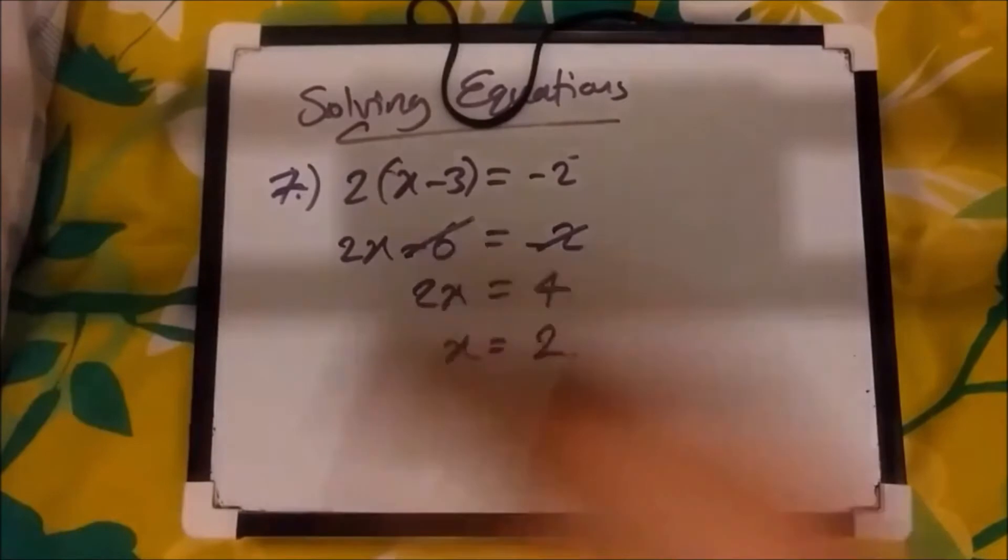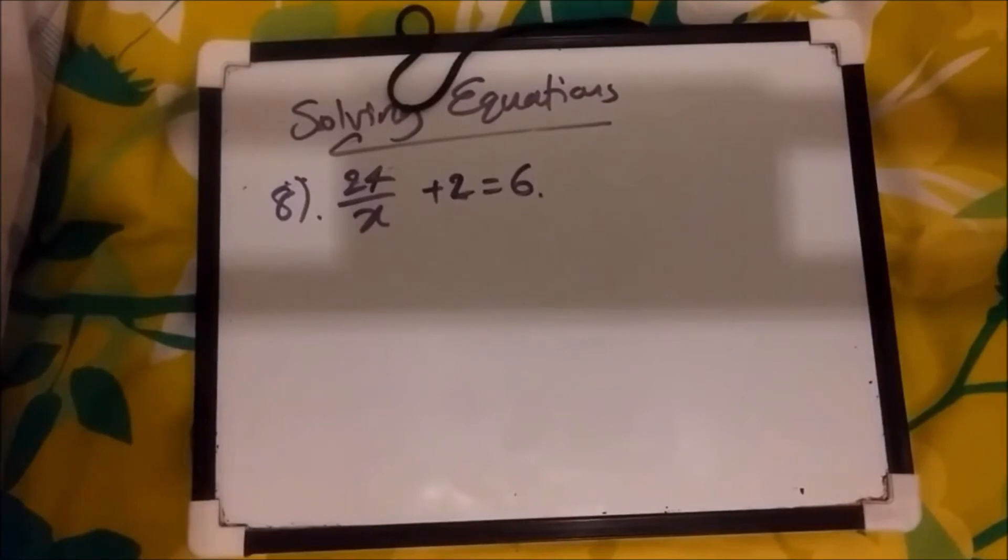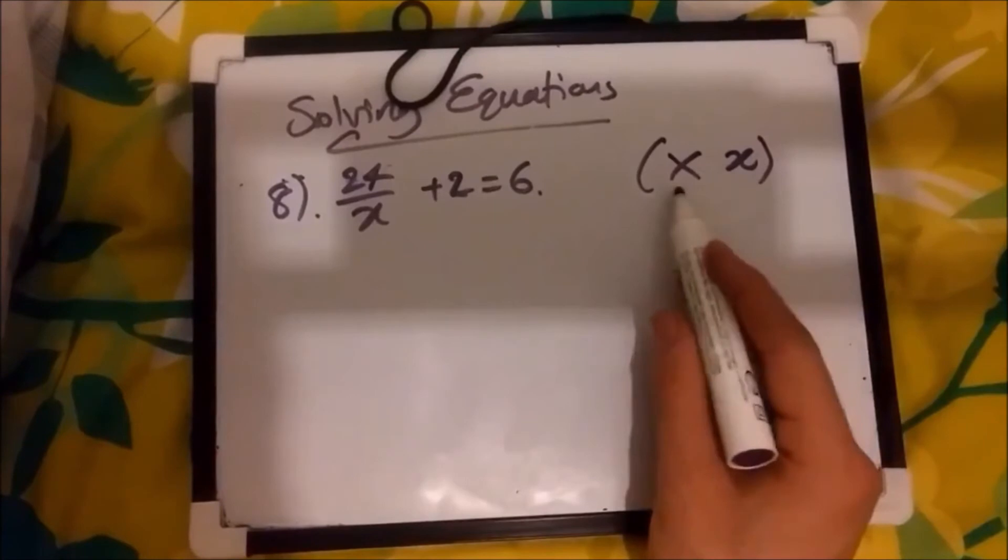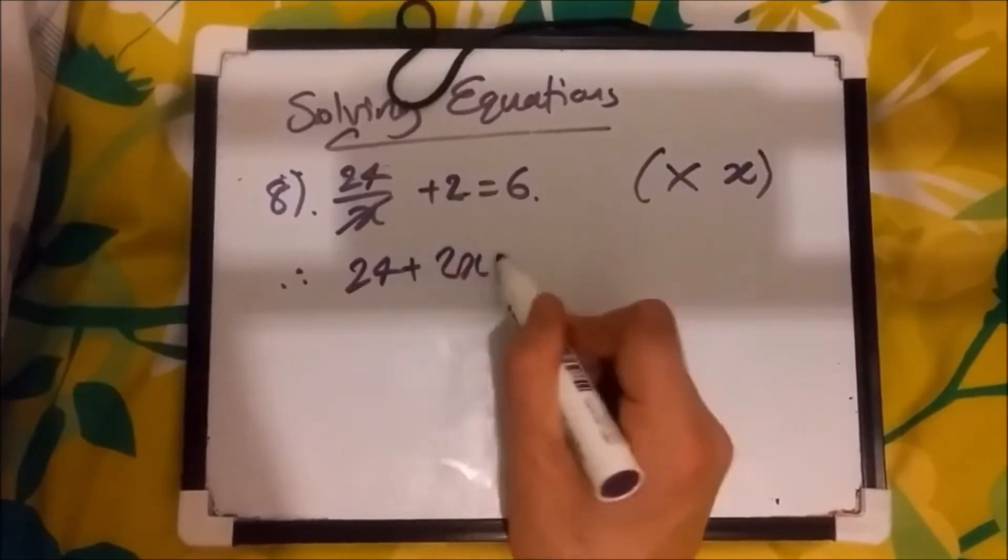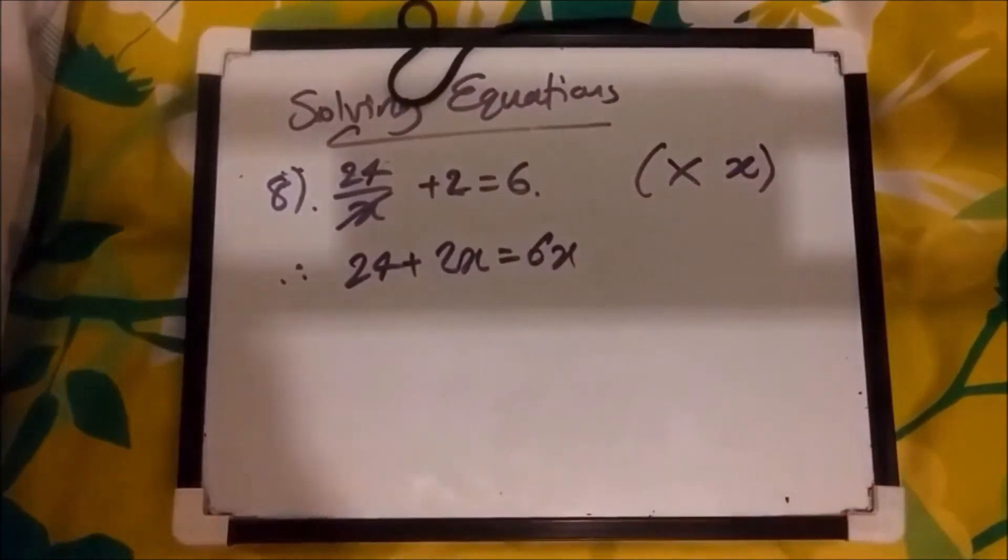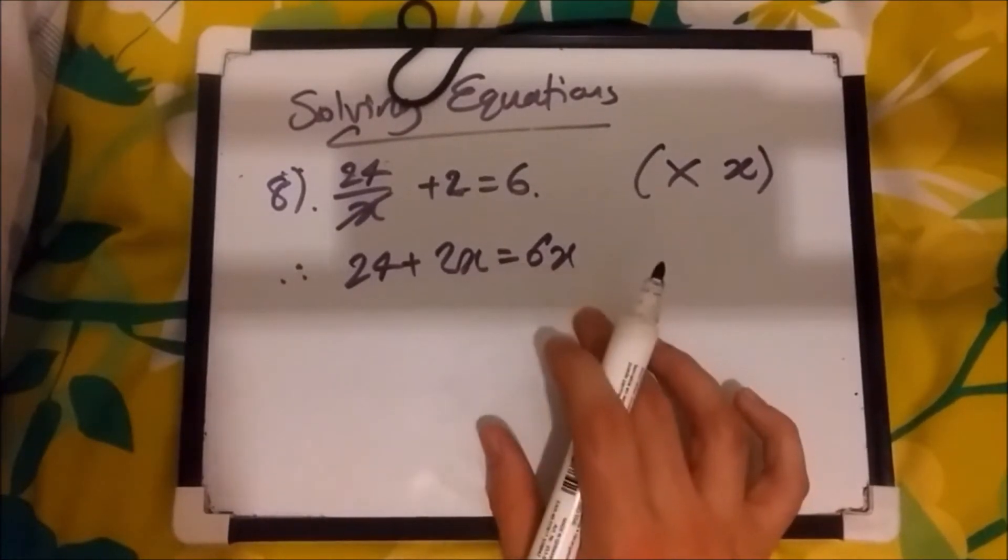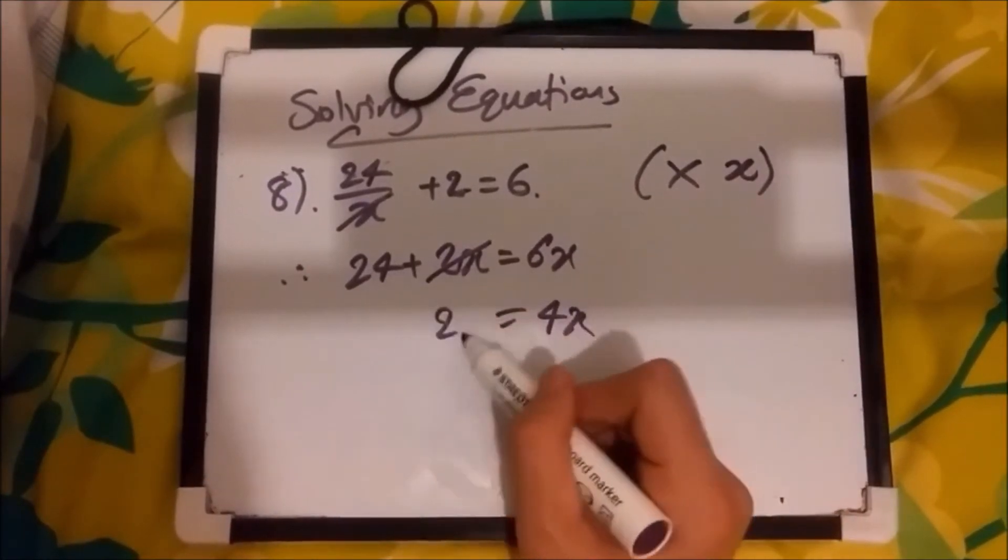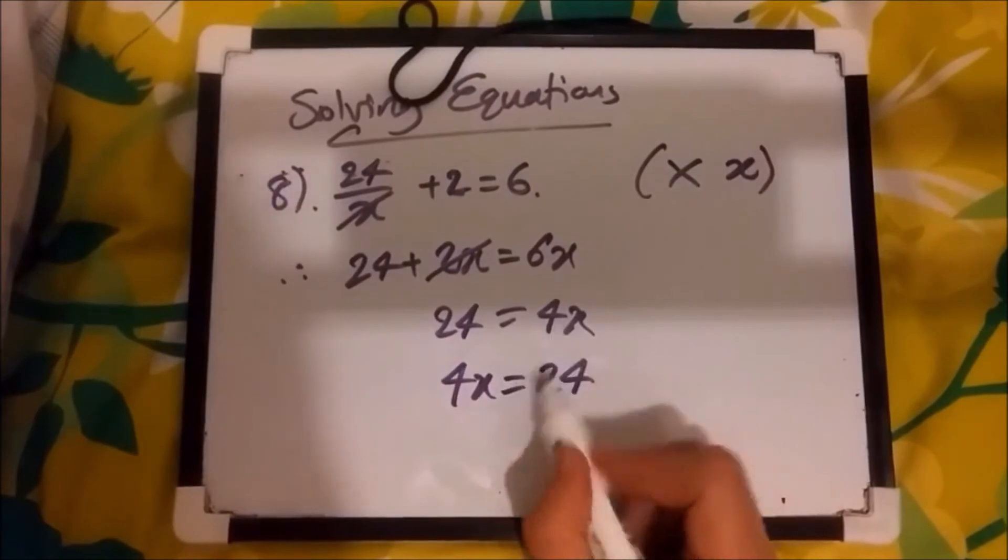Now, moving on to number 8. Here, we have something a bit different. We have 24 over x plus 2 equals 6. So just like the other fraction question, we now want to always clear the fraction. So the first thing I would recommend is to firstly multiply everything by what's at the bottom. In this case, it's x. So let's times x across. If you do that, you're just going to be left with 24. And the next two things are going to have a plus 2x and an equals 6x. Just like this. And now, just like the rest of the questions, let's go ahead and move all the x terms on one side. So if I move plus 2x across, it becomes minus 2x. 6x take away 2x is 4x. That means you've got 24 equals 4x. Now, finally, just divide the 4 across and you're left with 6 equals x. And that's it. Or x equals 6.